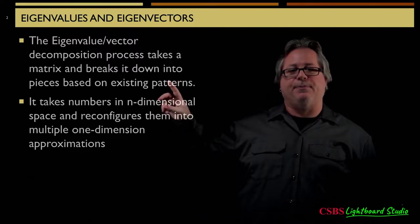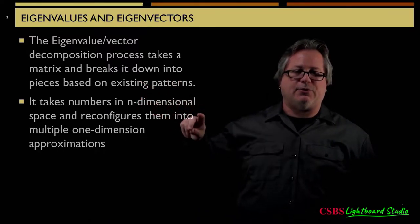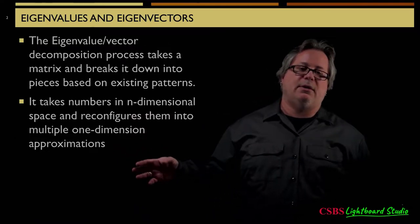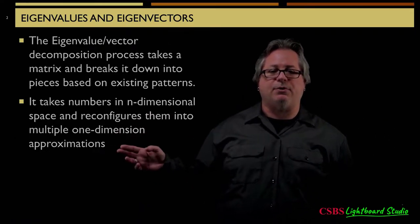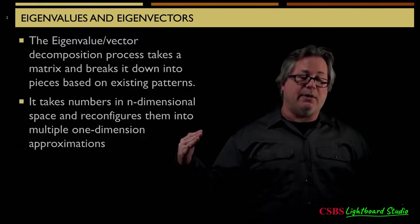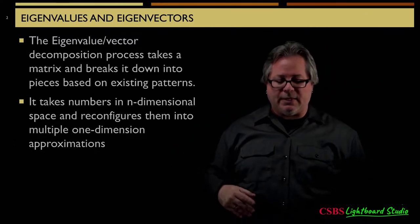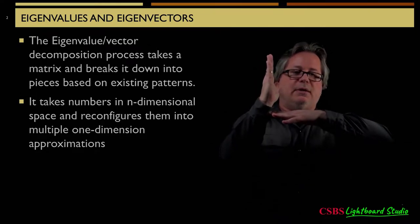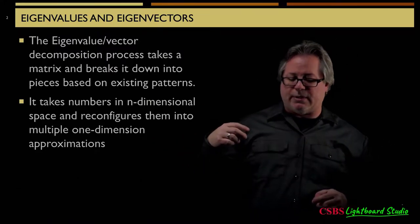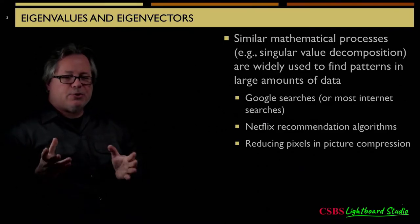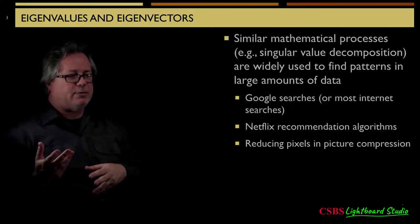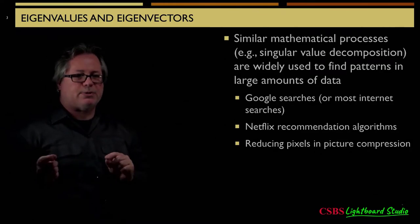The decomposition takes values in n-dimensional space and reconfigures them into multiple one-dimensional approximations. Same way where we're talking about an x-y relationship and trying to find a single dimension that cuts through both and can combine them — with eigenvalues and eigenvectors, it's doing it multiple times. Sometimes you'll hear the term singular value decomposition, which is essentially the same process — eigenvalues, eigenvectors, singular value decomposition are the same process with just minor differences. They're widely used to find patterns in large data like Google searches and Netflix recommendation algorithms, and even reducing pixels in picture compression.